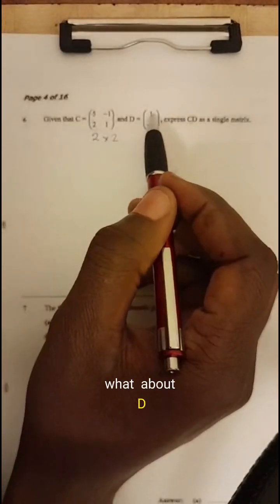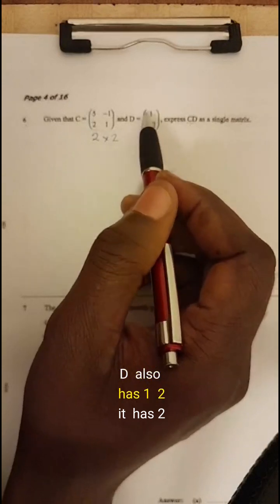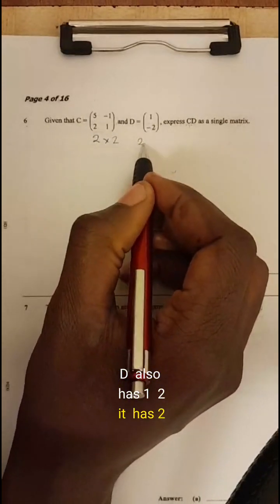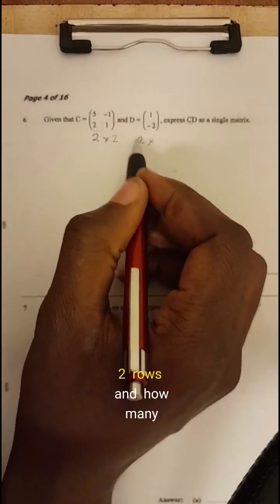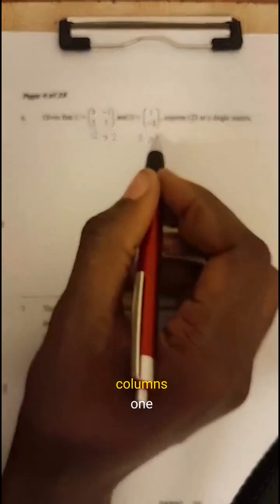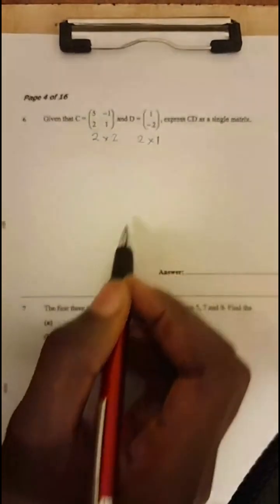What about D? D also has one, two. It has two rows. And how many columns? One. Okay.